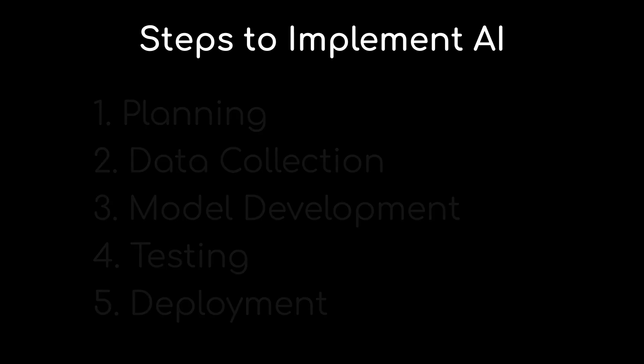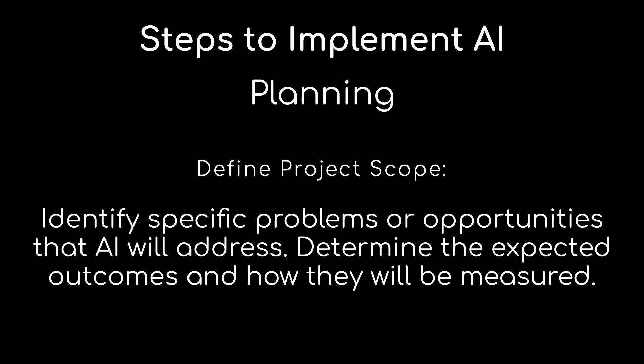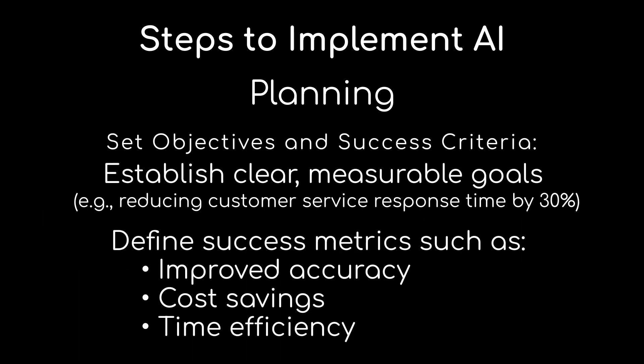When we look at how we're going to plan this out, first things first, we're going to define our project scope. We're going to identify the specific problems or opportunities that AI is going to help us with, and look at the expected outcomes and how we're going to measure them. Next, we're going to set the objectives and our success criteria — establishing clear metrics and goals, like reducing customer service response time by 30% or closing help desk tickets by 50%. You can define success metrics such as improved accuracy, cost savings, and time efficiencies.